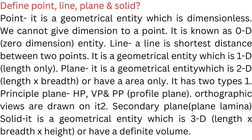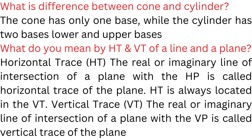A plane has two types: 1. Principal Plane — HP, VP, and PP — on which orthographic views are drawn. 2. Secondary Plane. Solid: a geometrical entity which is 3D, having length, breadth, and height, or a definite volume.